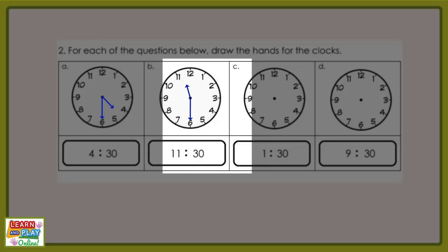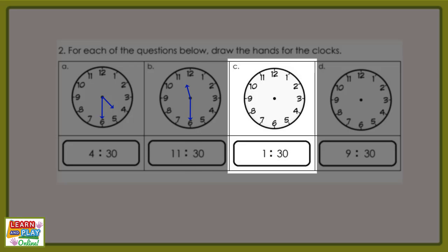Now let's move on to question C. Read the digital time and draw the hands for the clock. Have a think about where your minute hand should be drawn and where your hour hand should be pointing. This is what your clock should look like.